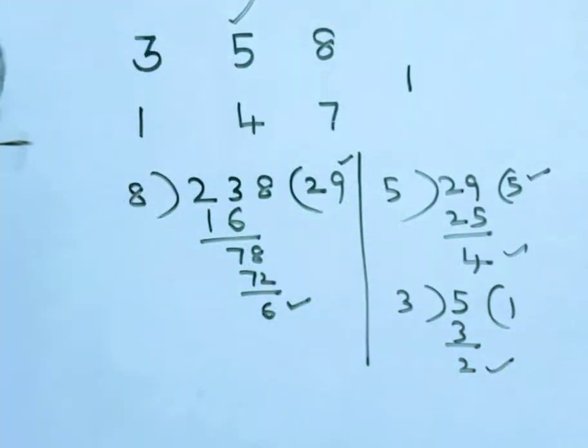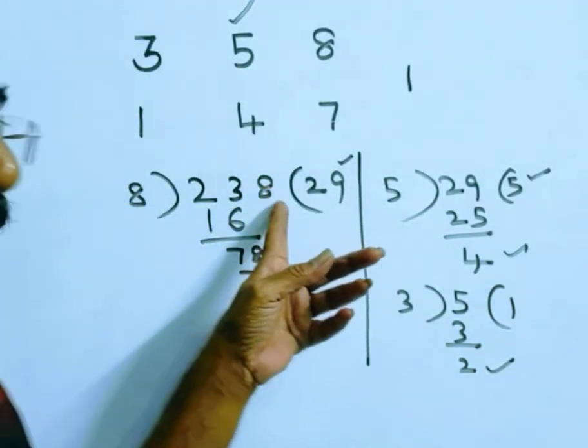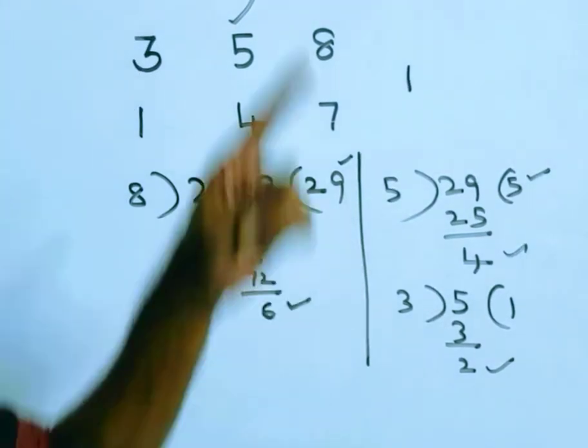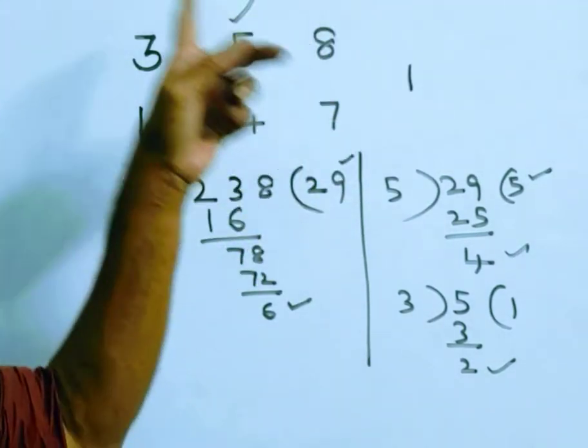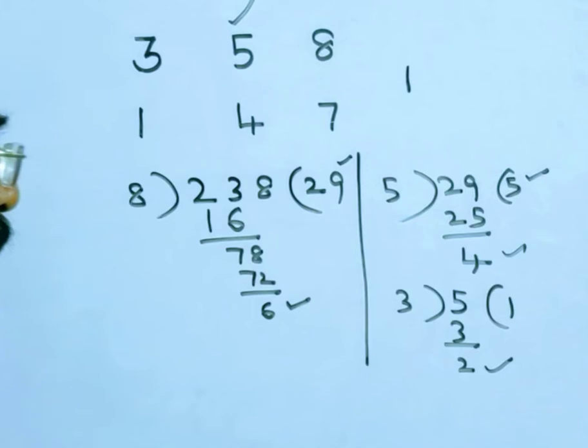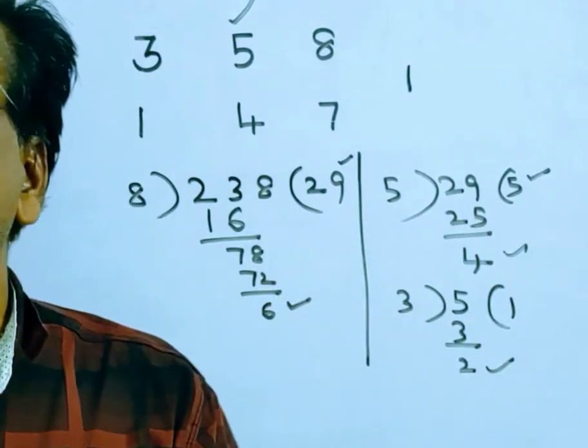Friends, so now when 238 is successively divided by 8, 5, 3, the remainders are 6, 4, 2.